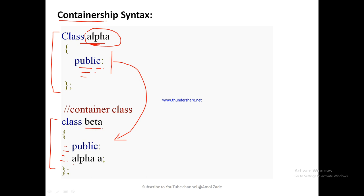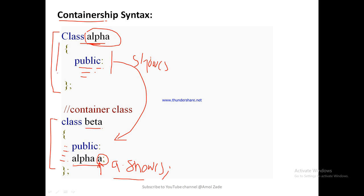One class is alpha, so we create an object of alpha like: alpha A, where A is the object of class alpha. With this object, we can call the methods from alpha class inside another class. For example, if we have to call the show function from alpha class, which is available in alpha class, we write it as alpha A and A.show(). So this show function is available in alpha class but is called in beta class, with no inheritance present.